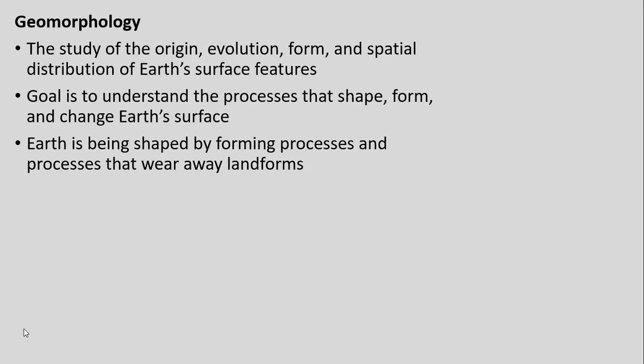All of this is housed under what we call geomorphology — the study of the origin, evolution, and form of the landscape: how we see the landscape, how it is distributed, and how it changes over time. The main goal is to understand how the landscape around us comes to look the way it does, and what processes shaped it. Earth, especially on longer geologic timescales, has been shaped by various processes that give us mountains, coasts, and all types of landforms.